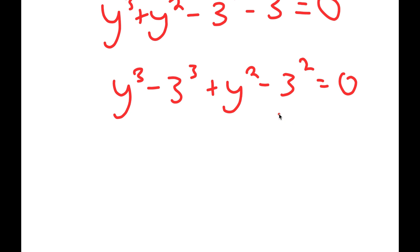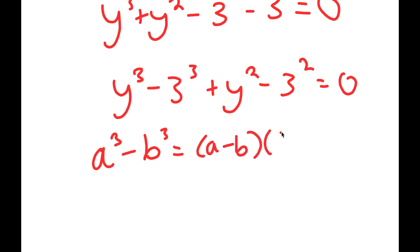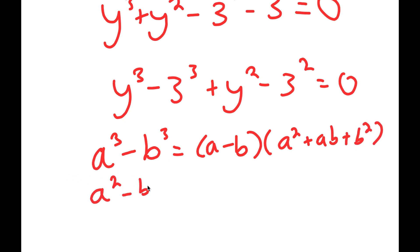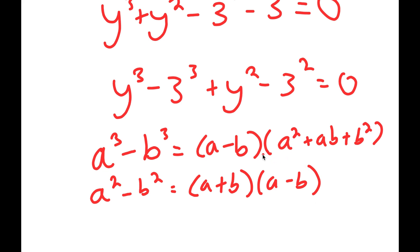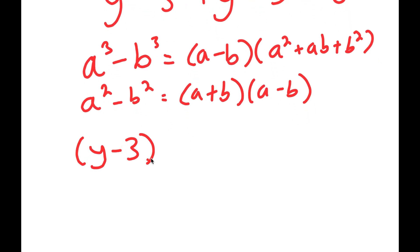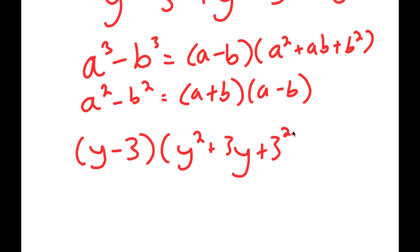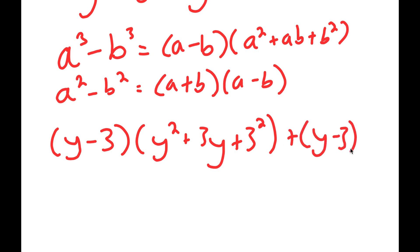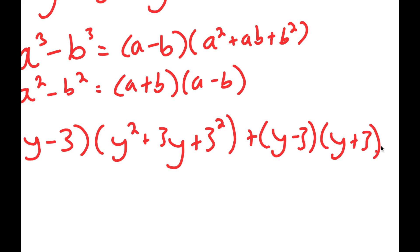From here, I can use two important properties. The first property is that a to the power of 3 minus b to the power of 3 equals a minus b times a squared plus ab plus b squared. The second property is a squared minus b squared, which equals a plus b times a minus b. So y to the power of 3 minus 3 to the power of 3 can be rewritten as y minus 3 times y squared plus 3y plus 3 squared.